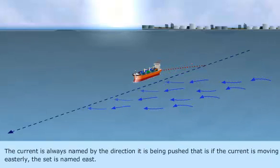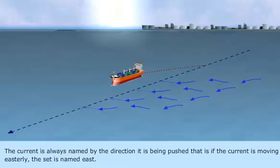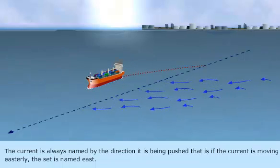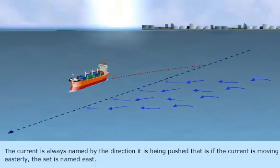The current is always named by the direction it is being pushed. That is, if the current is moving easterly, the set is named East.